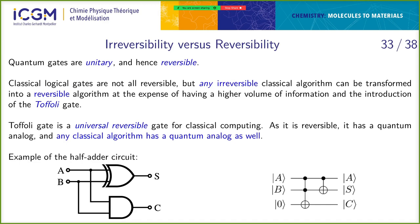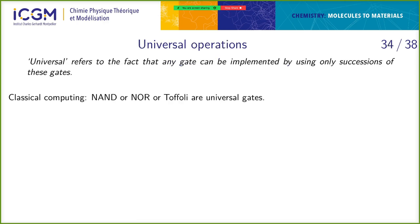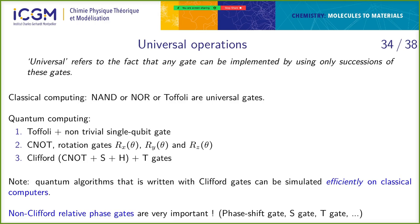Regarding whether you need Toffoli gates: any classical algorithm can be written with either an AND or an OR gate — those two are also universal for classical computers. The advantage of the Toffoli is that it's reversible, but it adds complexity. So if you want to make your classical algorithm reversible, you have to add complexity, but it's equivalently the same.